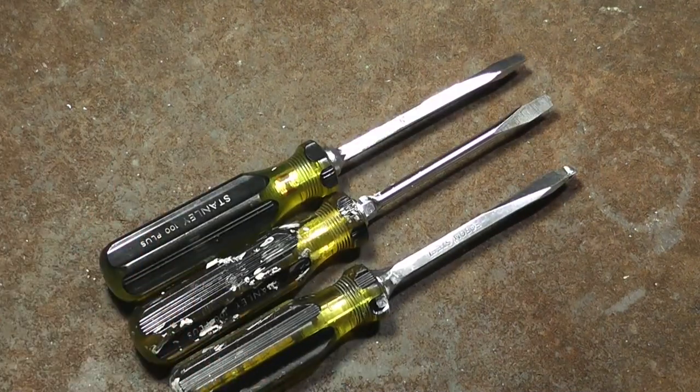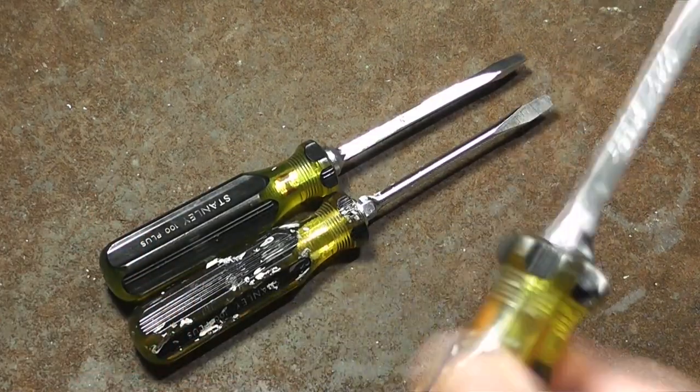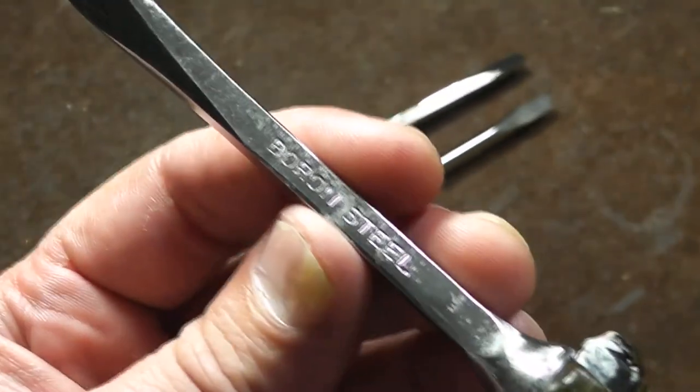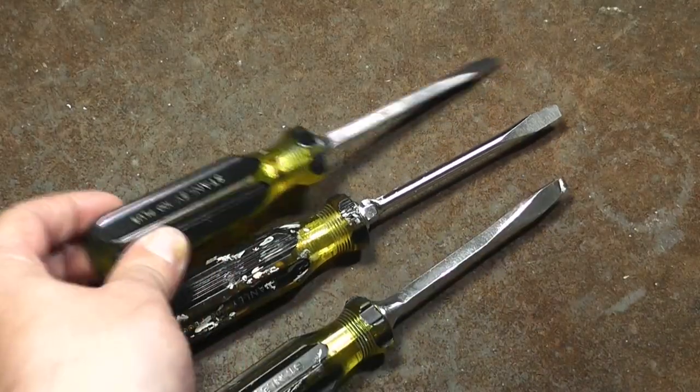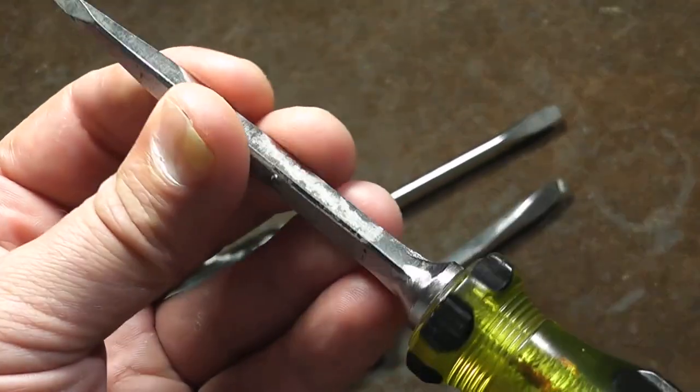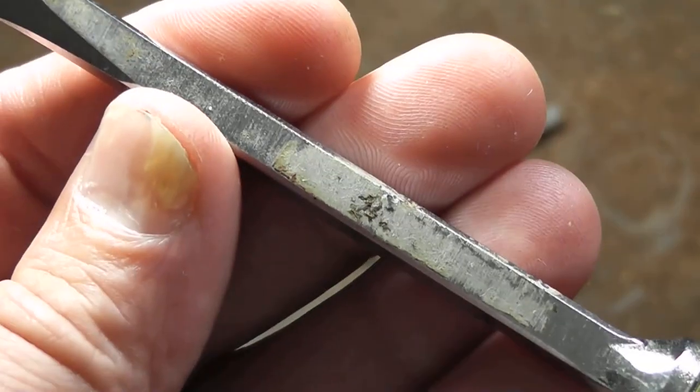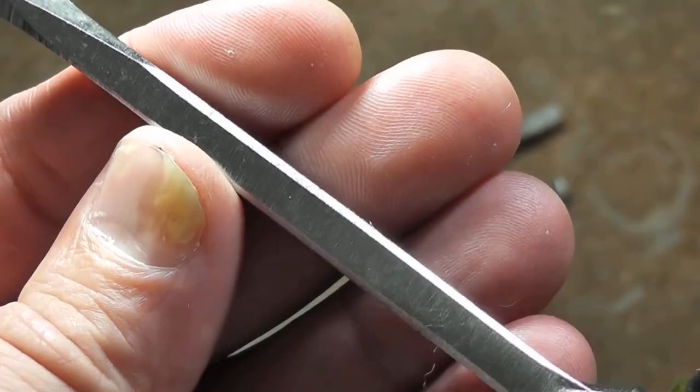That's kind of a disappointment that the current 100 pluses aren't quite as good as the older ones were. The easiest thing to look for when you're hunting these down is the OG ones are going to have square shank and have boron steel stamped on them. Slightly newer but still really good are not going to have boron steel stamp, but they're still going to be square shank.